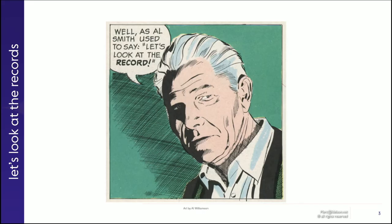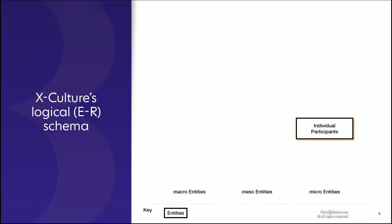First of all, we're going to look at the X-Culture records. Let's go over the entities and relationships in X-Culture data. Essentially, entities are objects or subjects that exist on their own, and relationships will be things that tie these subjects and objects together in an action or relationship, with each having a specific role.